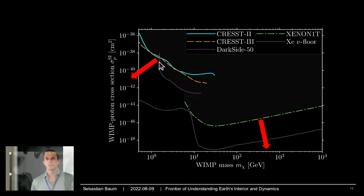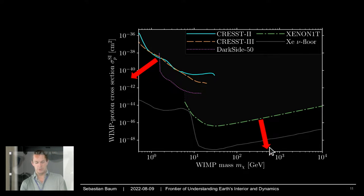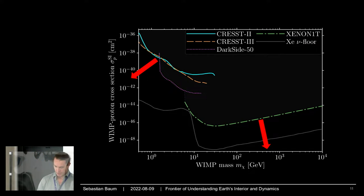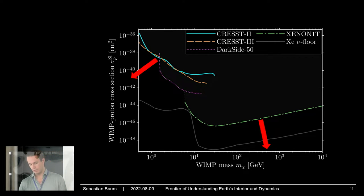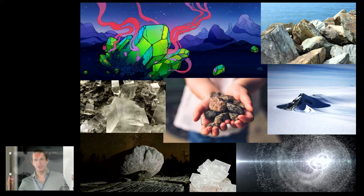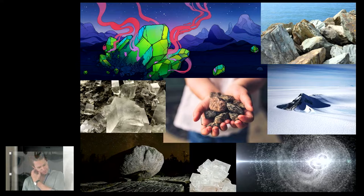Going into the future, one wants to extend the search to lower-mass and heavier dark matter candidates. There is a big effort to build bigger and bigger detectors, but it is hard — the bigger the detector gets, the harder it becomes. So what we started thinking about many years ago is: is there something else we can do?